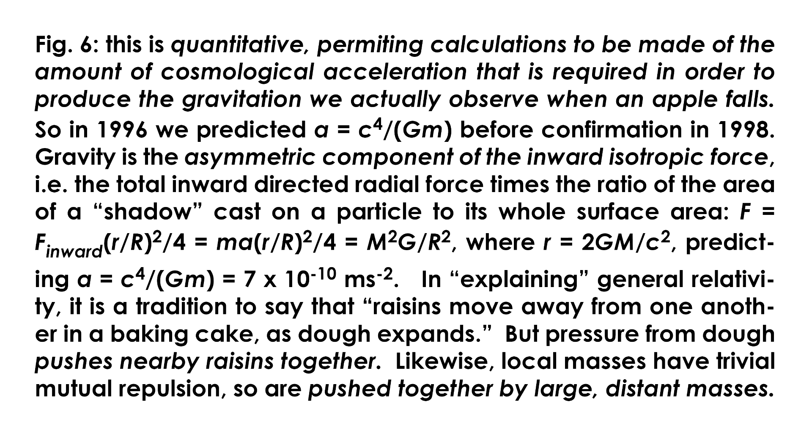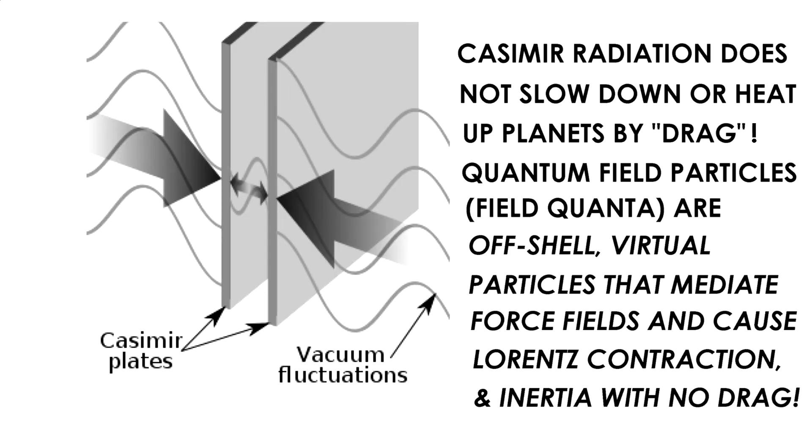If the Earth is moving this way, more particles will hit it from the front than from the back. If you're running in the rain, more rain hits you from the front of the face than in the back of the head because you're running into the rain.